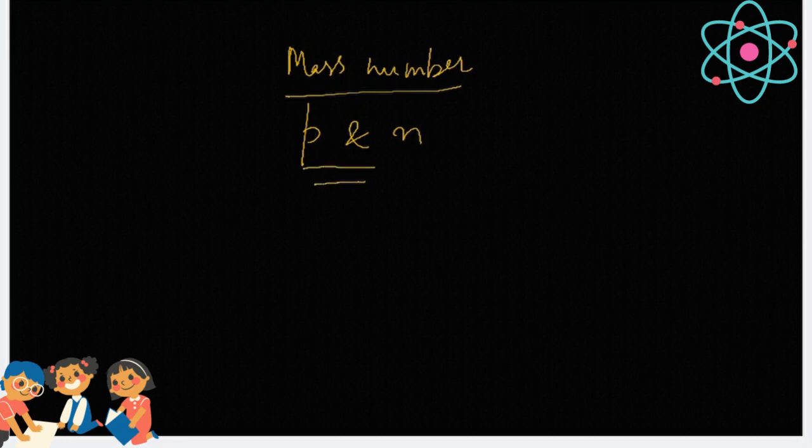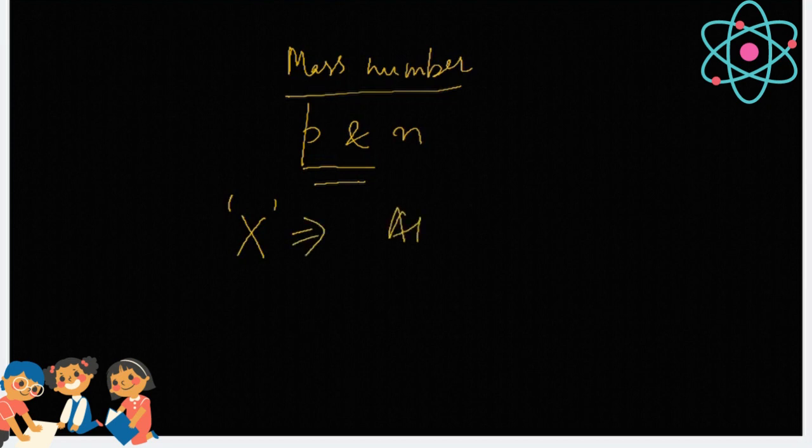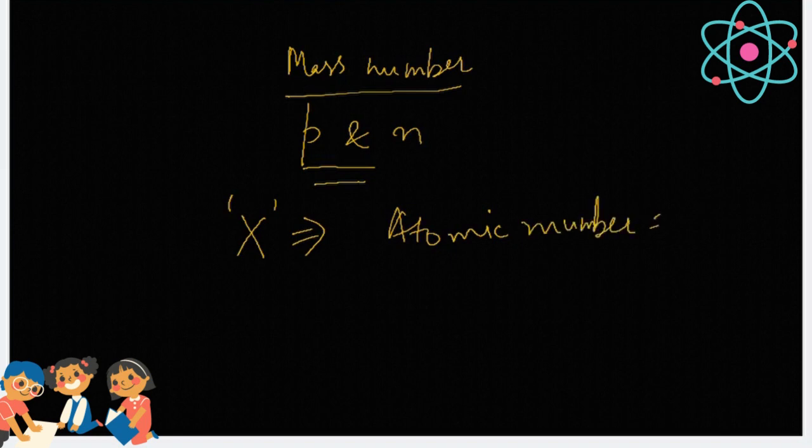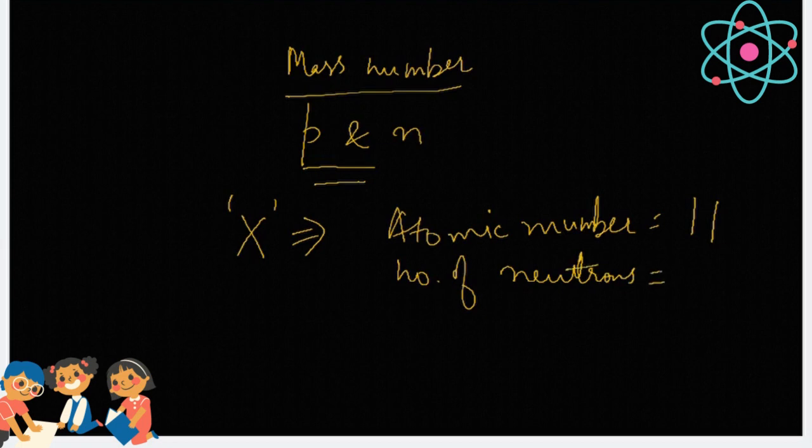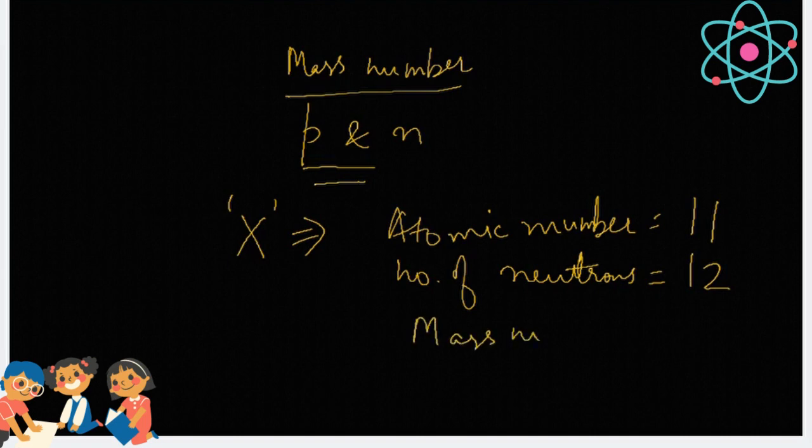For example, if I say you have to calculate mass number for an element X and I have given you the atomic number of X as 11, plus I have given you the number of neutrons as 12. Now, I am asking you to calculate the mass number for this X.